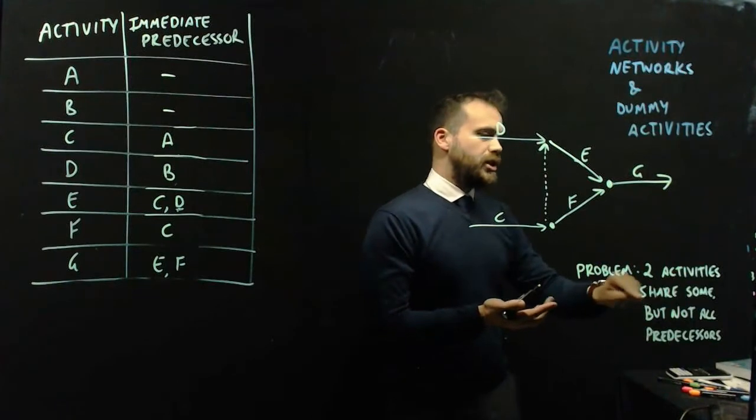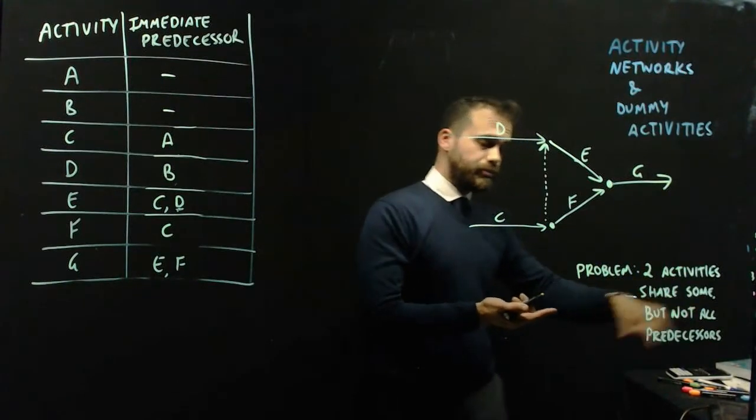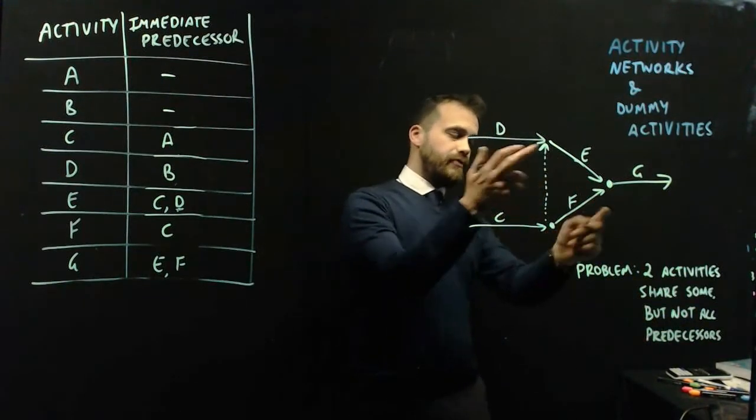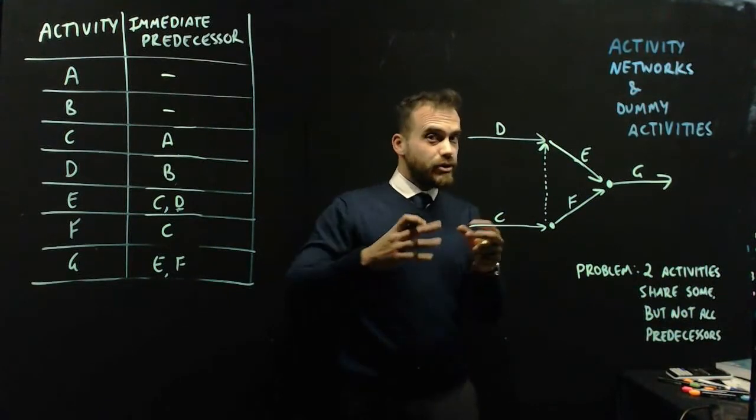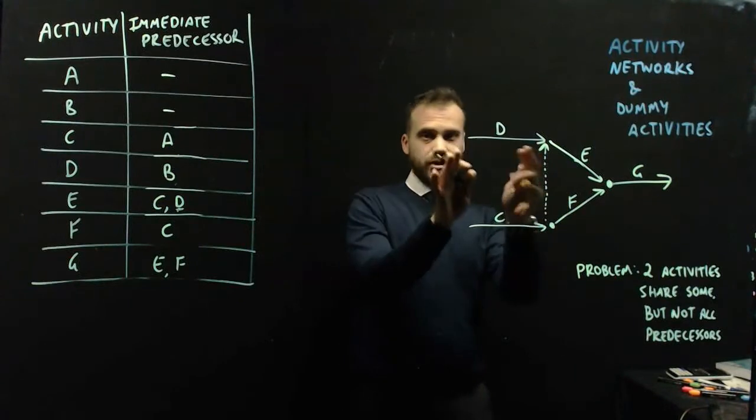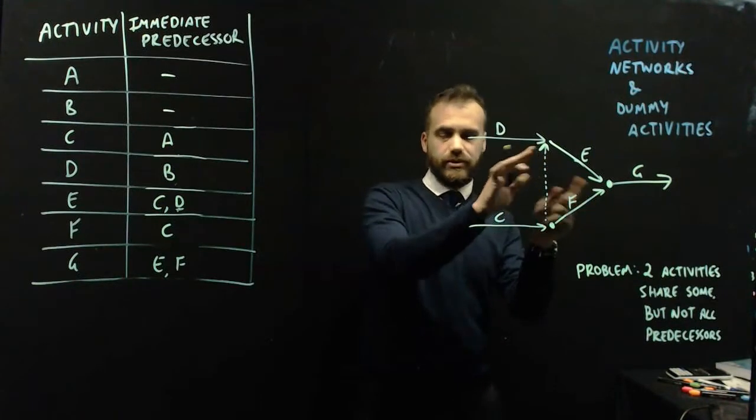This problem where two activities share some but not all predecessors. So E and F share some. In this case, they share C as a predecessor. But they don't share all because F doesn't have D in common with E.